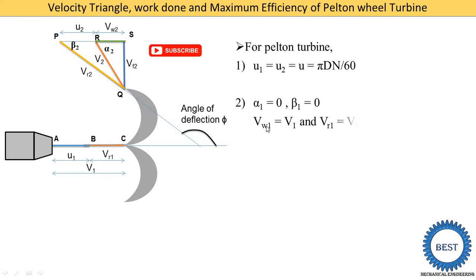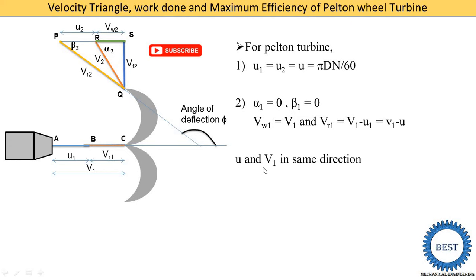Because V1 is horizontal, VF1 equals 0 and therefore V1 equals VW1. The relative velocity VR1 equals V1 minus U1, and since U1 equals U, we write VR1 equals V1 minus U. Also, U and V are in the same direction.